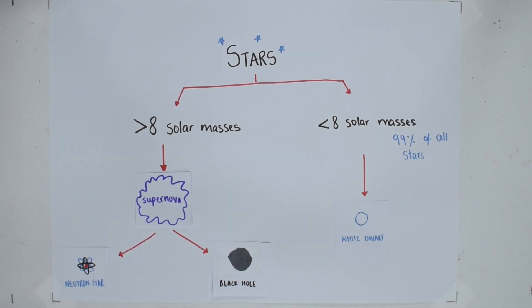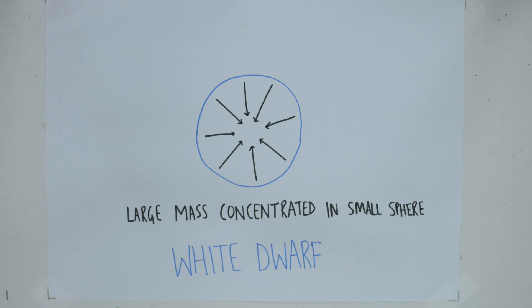The carbon core collapses and the outer layer is expelled, forming a white dense celestial body. With no fusion, there is no energy source. The gravitational pressure is immense.